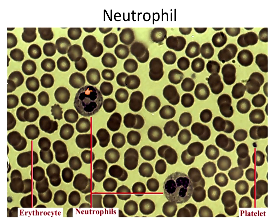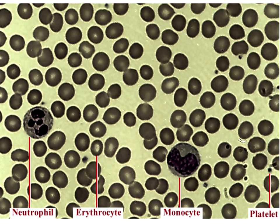A red blood cell count is where you're counting red blood cells in the millions. Average ranges for red blood cell counts for women is about 4.2 million, and for men it's about 5.2 million. The reason for those discrepancies is that on average men have a larger body size, so they're going to have a higher blood volume.